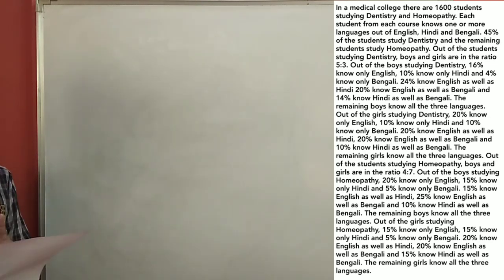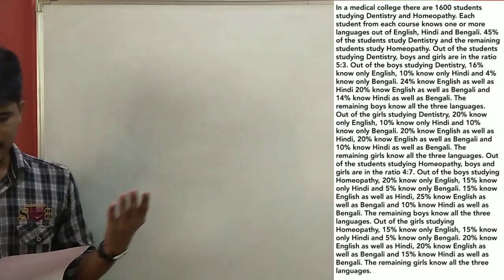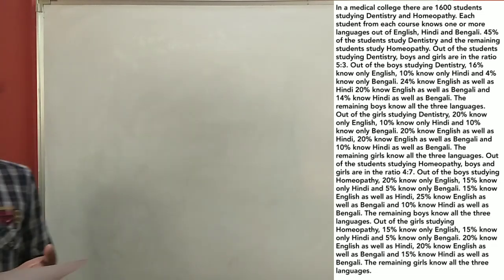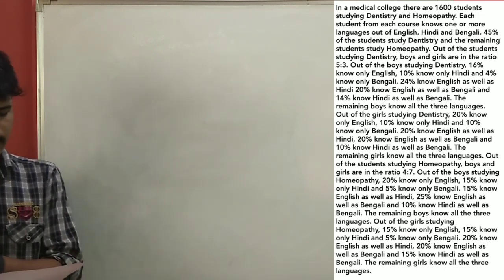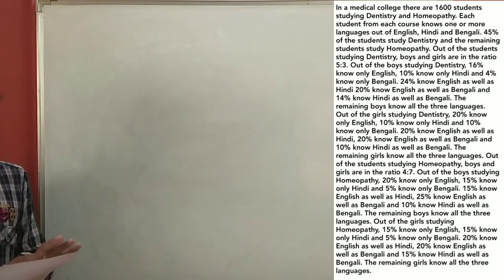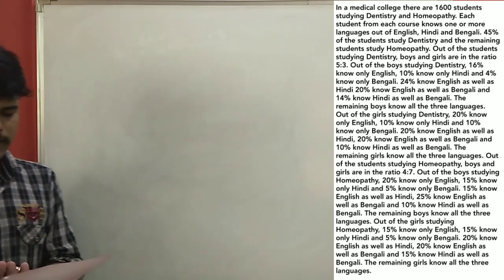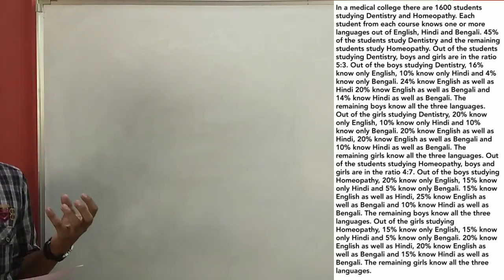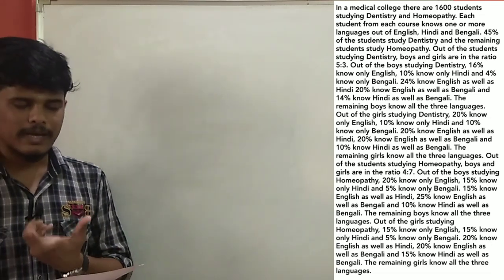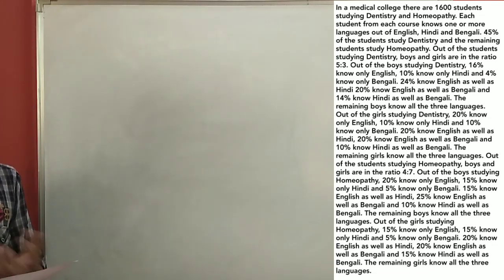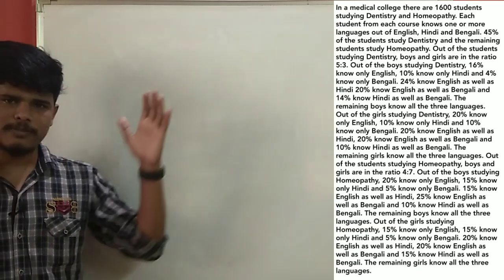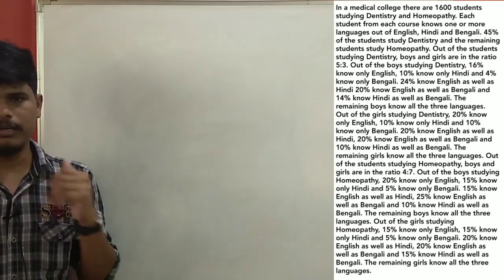There is a medical college with 1,600 students. They are studying dentistry and homeopathy — there are 2 categories. All students know one or more of: English, Hindi, Bengali. There are 45% of students studying dentistry. Next, there are boys and girls in dentistry with a boys-girls ratio given. They are studying English, Bengali, and Hindi. Please pause the video and go through the questions.